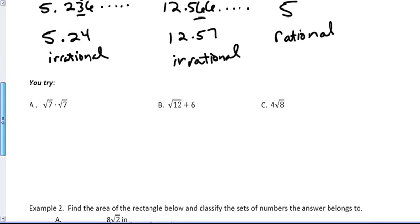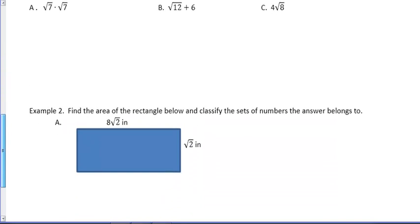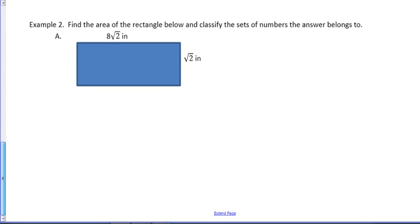There's some new track problems. Remember, we'll do those in class. We'll leave those alone for right now. Let's take a look at example 2. We're asked to find the area of the rectangle below, and classify all the sets of numbers the answer belongs to. So once again, finding area is simple. The area of a rectangle is very easy, length times width.